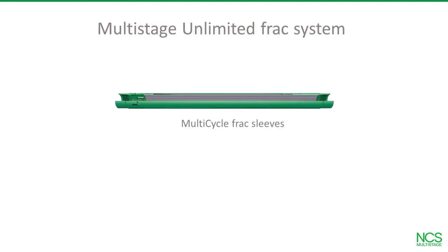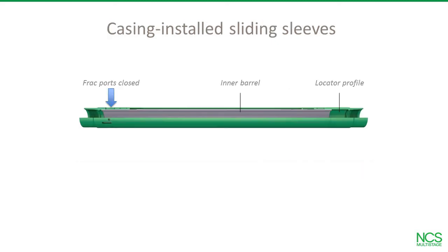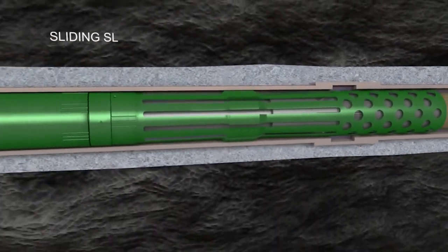The pinpoint system has two parts: casing sleeves that are run and cemented as part of the production string when the well is drilled, and a coil tubing frack isolation assembly that operates one of the sleeves during the frack job. The sleeves match the properties of the host casing and have a full drift inner diameter. The inner sleeve slides down to open frack ports to the formation. The frack isolation assembly comprises mainly a multi-set bridge plug, sleeve locator, and two downhole gauge recorders. The assembly is deployed on coiled tubing to locate and shift individual sleeves and isolate the target zone from the wellbore below. This animation shows a single pinpoint frack stage.